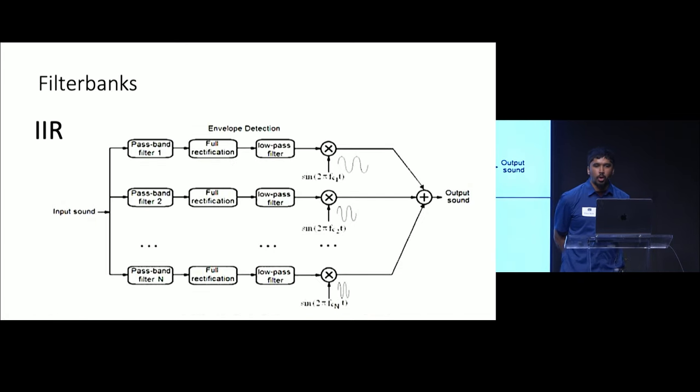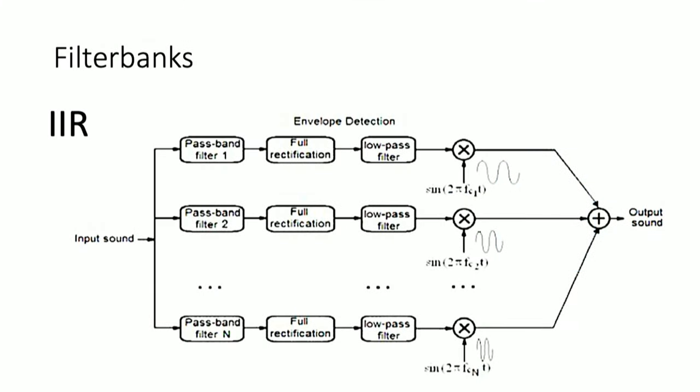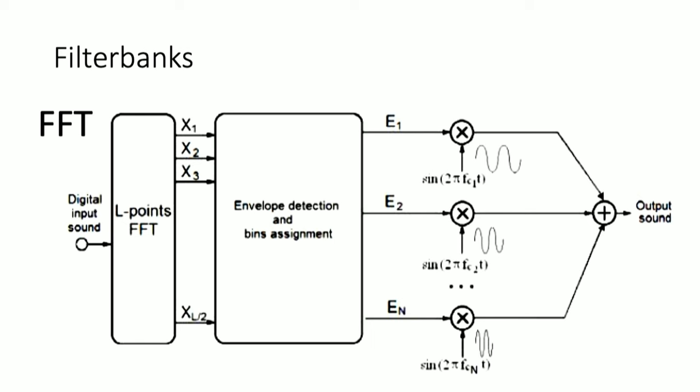There are two approaches to designing the filter banks used in vocoder simulations. The first is the IIR filter bank approach, where a bank of fourth-order Butterworth IIR bandpass filters are used, approximating auditory filters in terms of bandwidth and center frequencies. Envelopes from each band are extracted using low-pass filtering and used to modulate the carrier signal, then summed to generate the final acoustic simulation. The second approach is an FFT-based filter bank, where the FFT of the input signal is calculated and the FFT bins are combined to form N bands with bandwidths corresponding to auditory filters. The primary parameters are the FFT size and the number of frequency bands.